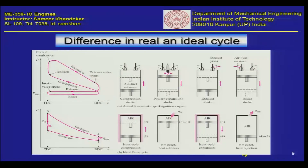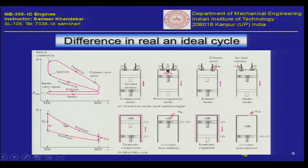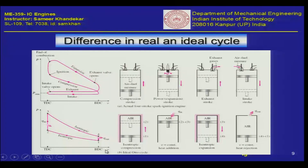Coming back to this diagram again — we have seen this diagram several times now. Let us quickly understand the operation again. Taking the example of an ideal Otto cycle, which we have already studied in the last lectures, these are the four processes: the isentropic compression process, the heat addition process, the expansion process from 3 to 4, and then the heat rejection process from 4 to 1.